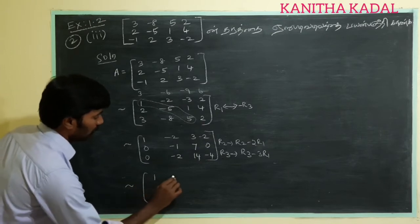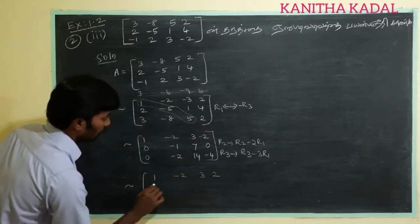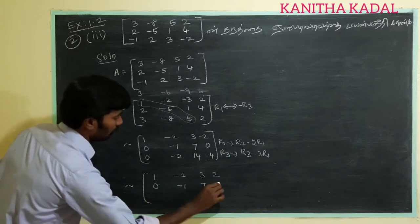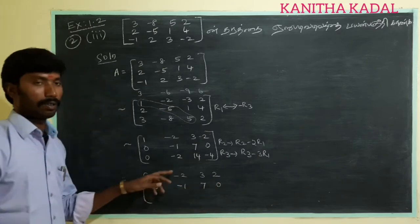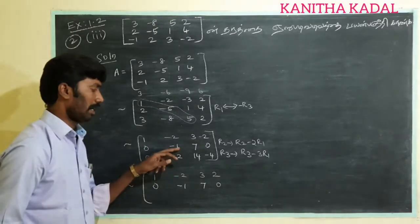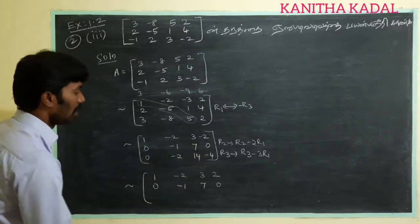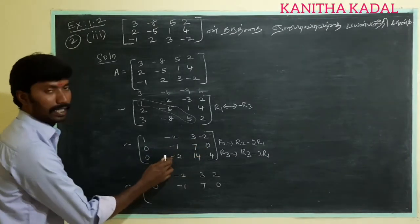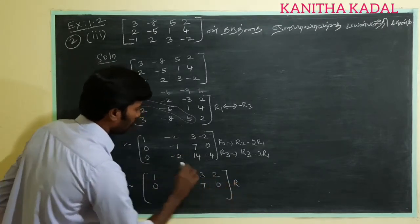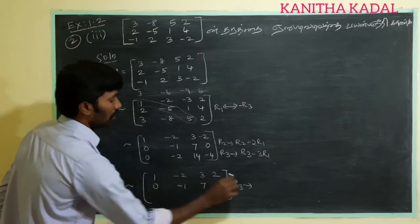The first row we change: 1, minus 2, 3, 2. Second row we change: 0, minus 1, 7, 0. Third row we change. The transformation is R3 tends to R3 minus a multiple of R2.